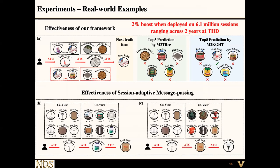We also conduct a case study visualizing the effectiveness of our session adaptive message passing. In a sequence where the user's clear intention is to decorate their garden, among the neighborhoods of each item, neighbors related to the current session end up with higher attention — for example, ball rake ends up with 0.3 attention weight — while the chandelier, unrelated to garden decoration, ends up with very low attention. Furthermore, comparing attention weights of the same item ball rake across two different sequences, even when neighbors are identical, the attention weights differ, successfully verifying the effectiveness of session adaptive message passing.